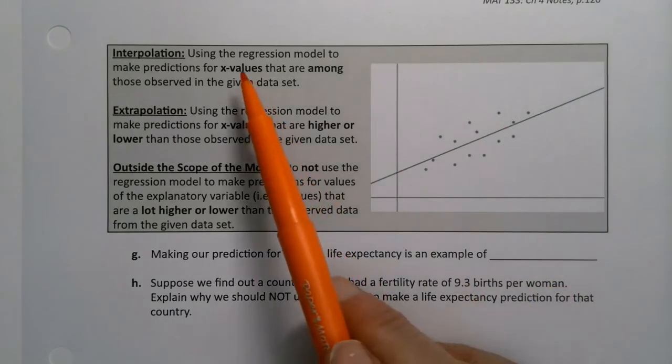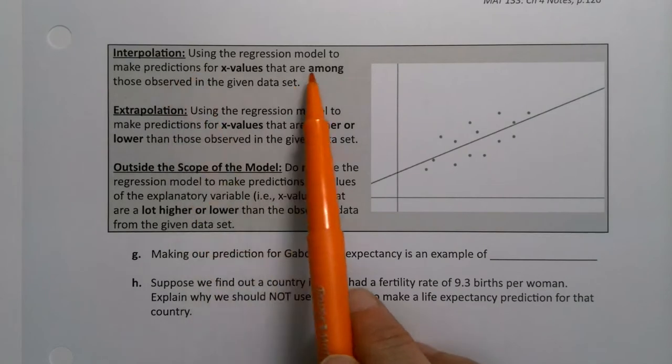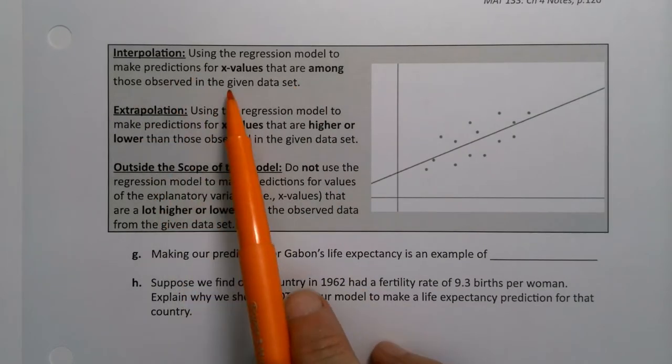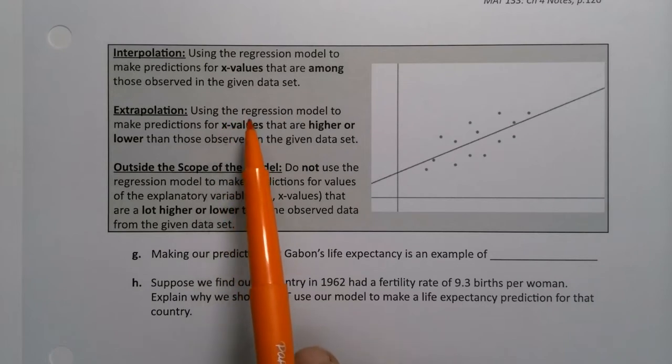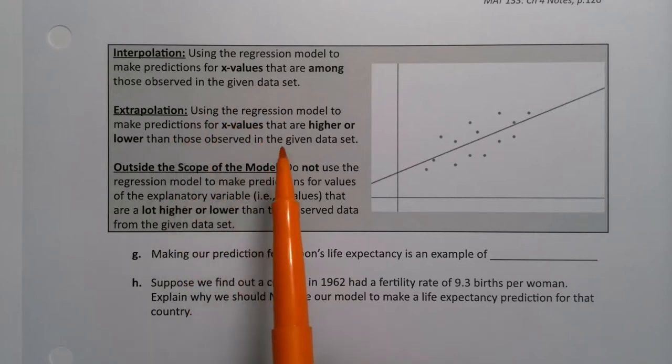Interpolation is when you use the regression model to make predictions for x values that are among those observations in the given data set. And extrapolation is when you use the regression model to make predictions for x values that are higher or lower than those observed in the data set.